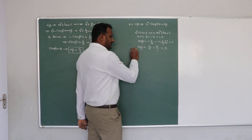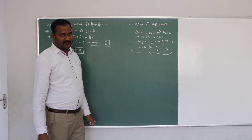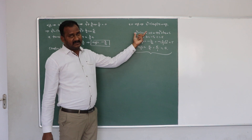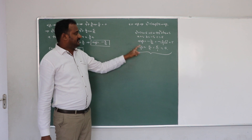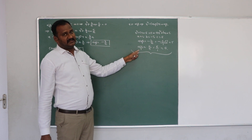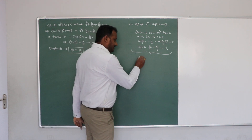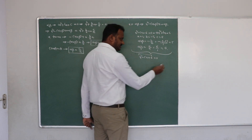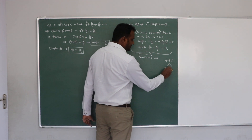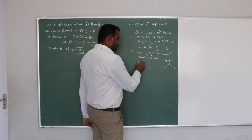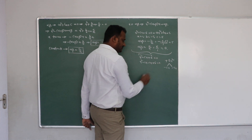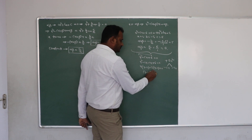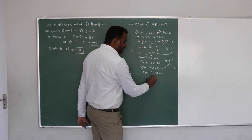Now you might still have a doubt — are these values correct? Let us verify whether alpha plus beta and alpha times beta match the actual zeros of this polynomial. Finding zeros of x squared minus 5x plus 6 equals zero: multiply first and last to get 6, and the sum should be minus 5, giving minus 2x and minus 3x. So x squared minus 2x minus 3x plus 6 equals zero.